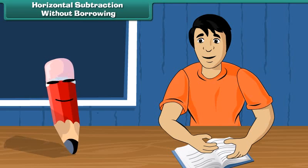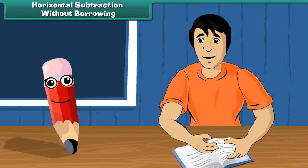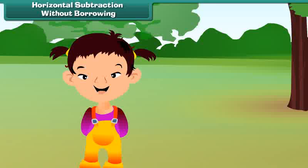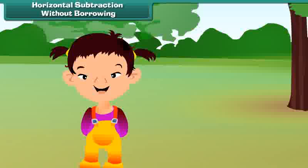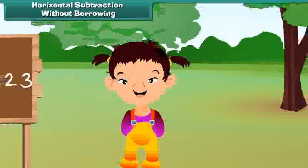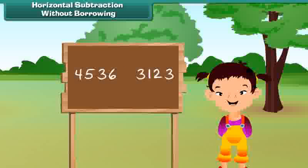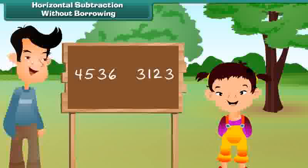Let us now move on to subtraction. Wendy went to a picnic last Saturday. The picnic spot had two boards with two different numbers written. Let us look at the numbers: 4536 and 3123. Her father asked her to tell the difference between the numbers. Let us help her.